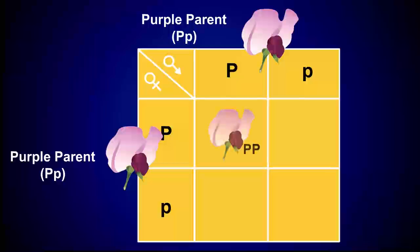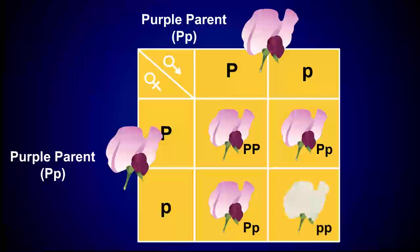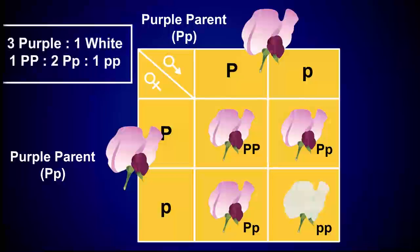The area within the Punnett square represents the possible zygotes, or offspring produced by a combination of a specific egg or sperm cell. Note that we cannot predict which egg cell will be fertilized by which sperm cell, so a Punnett square indicates all of the possible combinations.